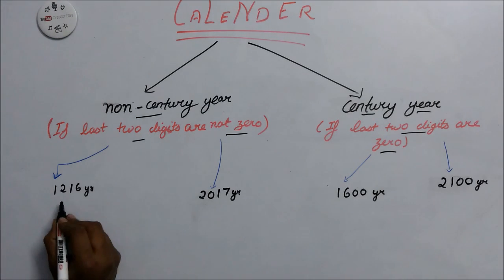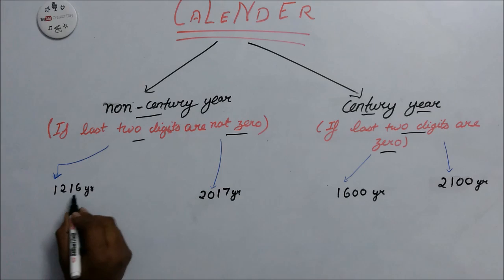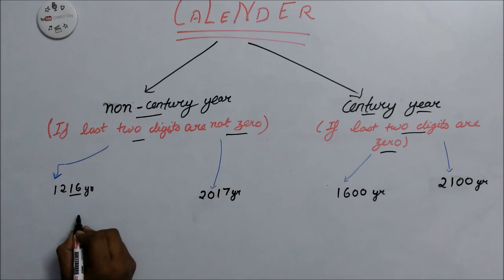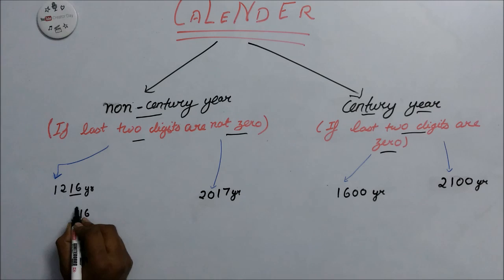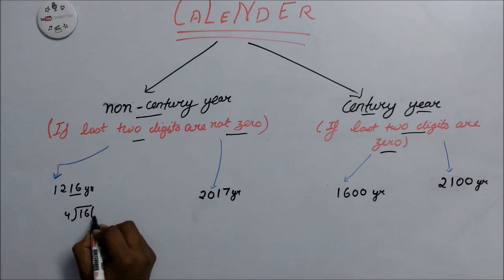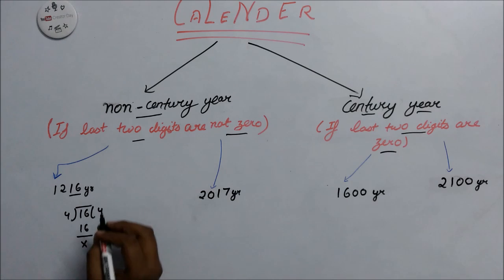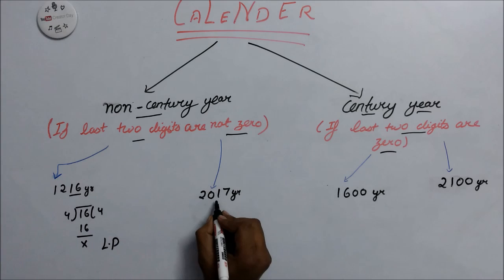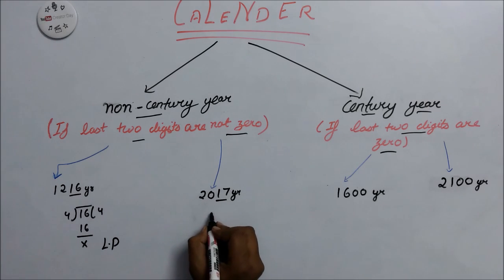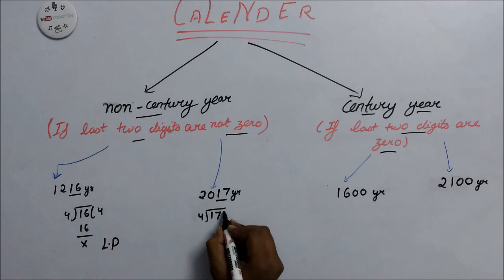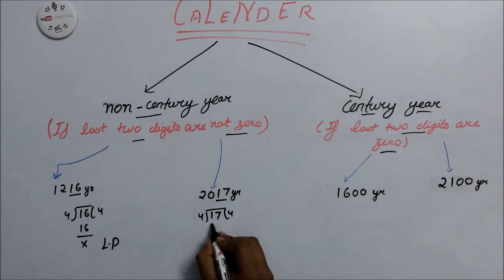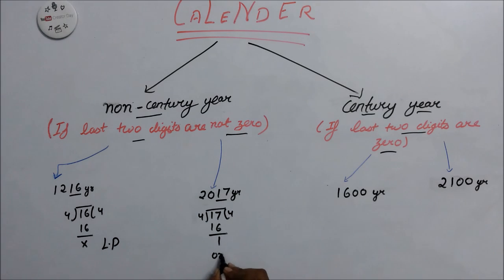Here are some examples. Take the year 1216 — we take the last two digits, 16, and divide by 4. This gives remainder 0, which proves it is a leap year. For 17, we divide by 4 and get remainder 1, so this is an ordinary year.